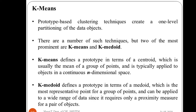In the previous video lecture we saw prototype-based clustering, where clusters are mainly based on centroids defined for continuous attributes or the medoid defined for categorical attributes. These prototype-based clustering techniques create one level of partitioning of data objects. Two of the most prominent techniques are k-means and k-medoid. K-means defines a prototype in terms of a centroid, which is usually a mean of a group of points, and is typically applied to objects in a continuous n-dimensional space.